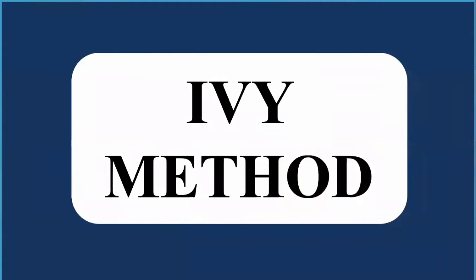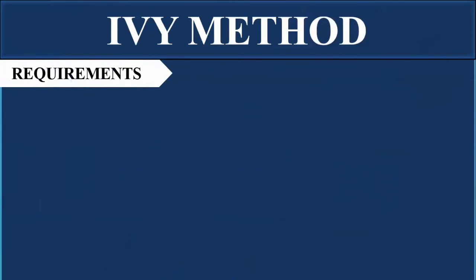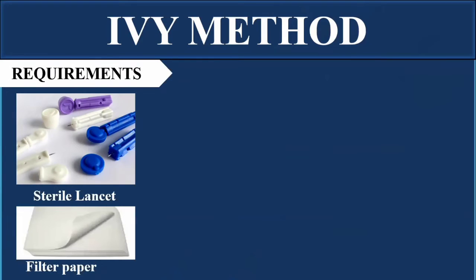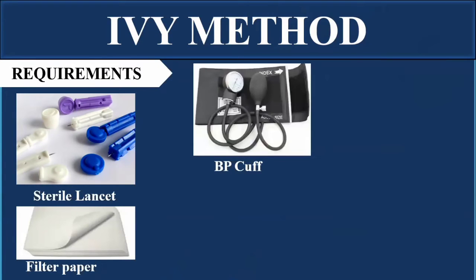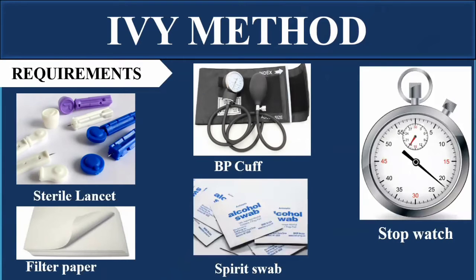The next method is the IV method. The IV procedure is slightly different from the Duke method. The requirements are mostly the same — a sterile lancet set, filter paper, spirit swab, and stopwatch — but it also includes an additional item: a blood pressure cuff.